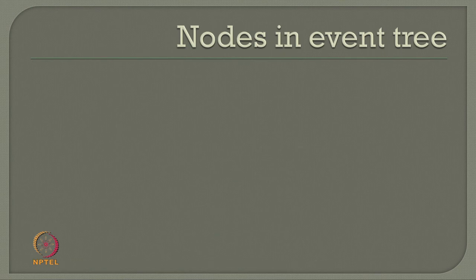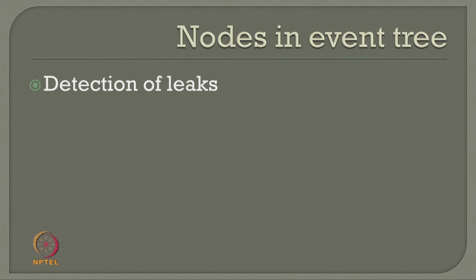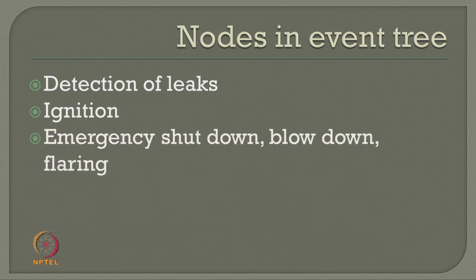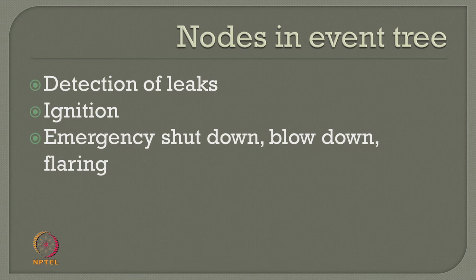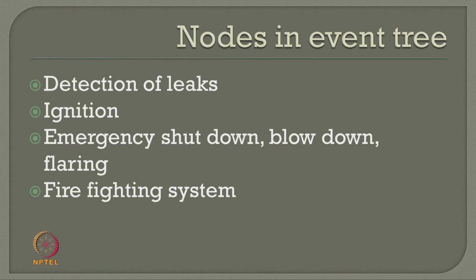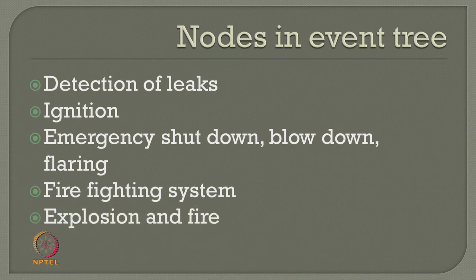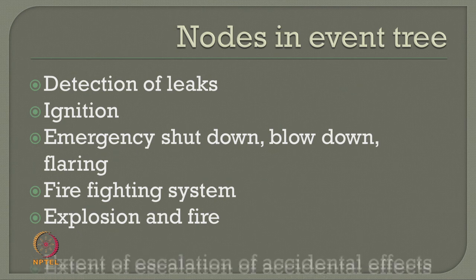In a given event tree, nodes are the points where leaks are detected — wherever leak detection is possible, we classify it as a node. Wherever ignition is possible, those can also be identified as nodes. Location of emergency shutdown valves, blowdown preventers, and flaring stack points can become important nodes. External firefighting systems, sprinklers, and deluge systems used for fire and explosion prevention or mitigation can also be used as important nodes in a given event tree, as well as points tracking the extent of escalation of accidental effects.